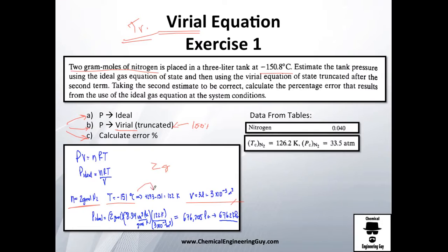If you convert it to Kelvin it's about 122 Kelvin. They tell you to calculate the pressure with ideal gas which is letter A, and then use the truncated equation which is letter B, taking the second estimate and calculate the error.